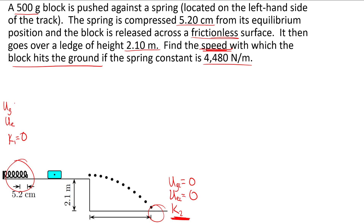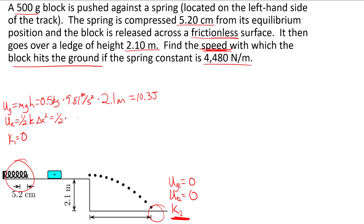Let's find our energies at the top. Gravitational potential energy is mgh: that's 0.5 kilograms times 9.81 meters per second squared times 2.1 meters, giving 10.3 joules. Elastic potential energy is one-half k delta x squared: that's 0.5 times 4,480 newtons per meter times 0.052 meters squared, giving 6.06 joules.